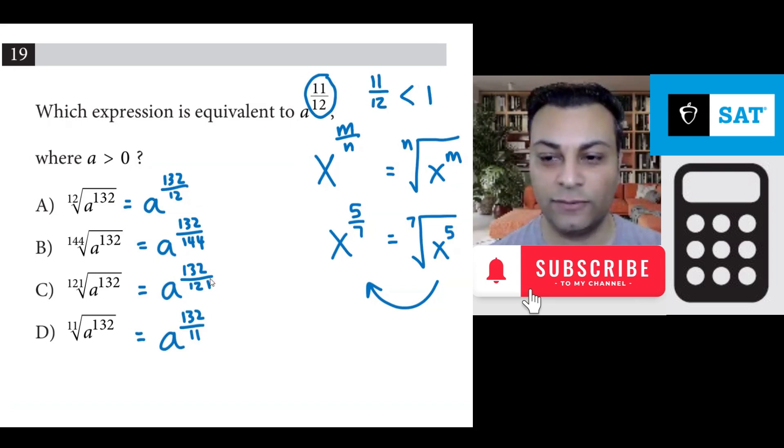And of all the fractions that we have, there's only one that's below 1, which is this one, because the numerator is less than the denominator. So this is the answer right away because you can see 132 over 144 is less than 1.